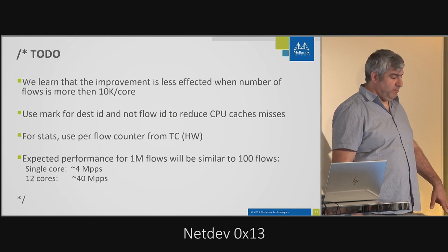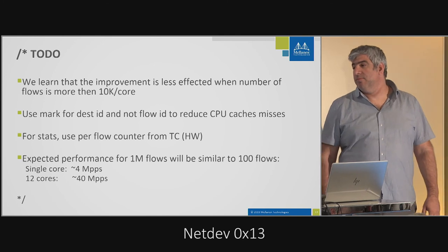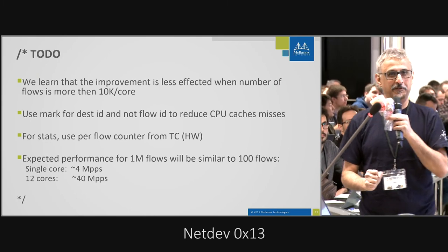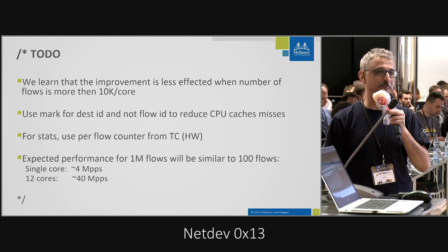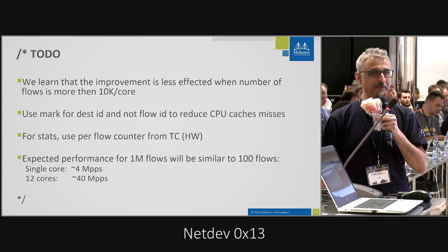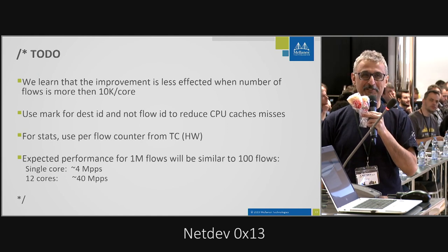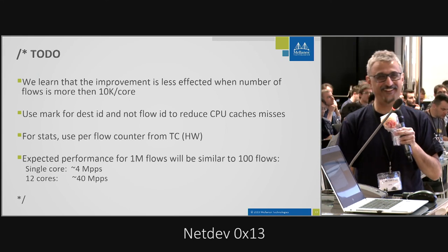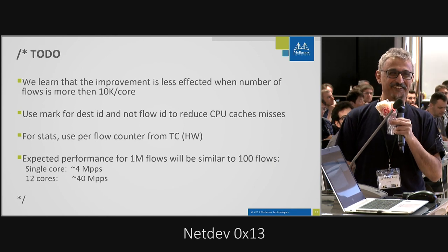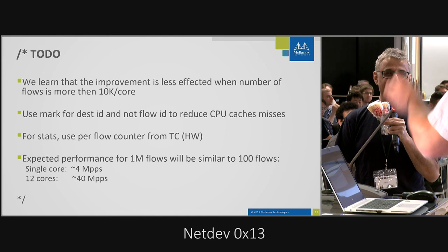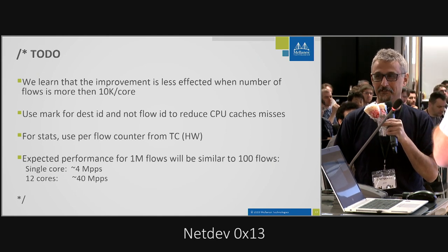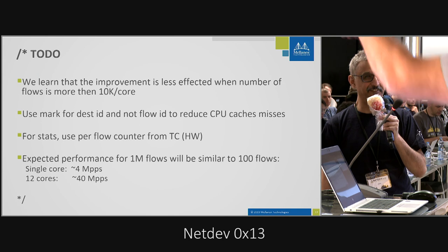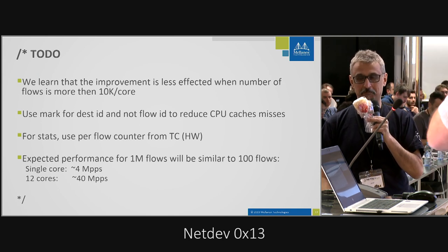Wrapping up — the best line of the day was '100 million packets per second with zero cores.' Ronnie pointed out that with OVS offload, we do VXLAN forwarding of 70 million packets per second with zero cores — no CPU needed to forward packets to a VM and back to the wire. So we think we can handle a hundred.